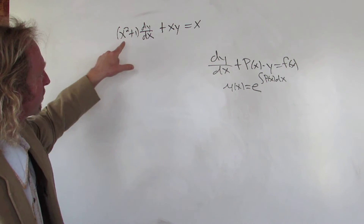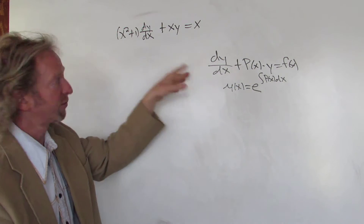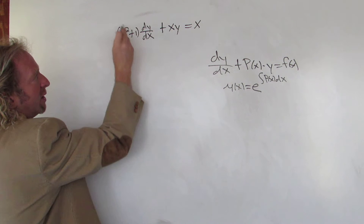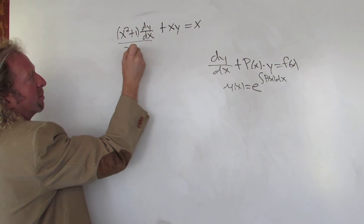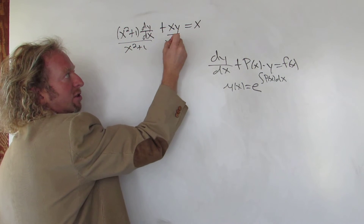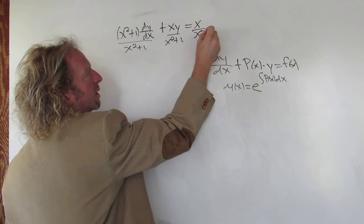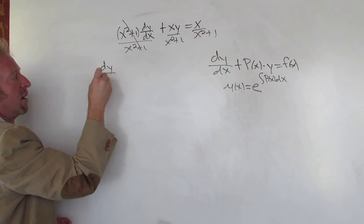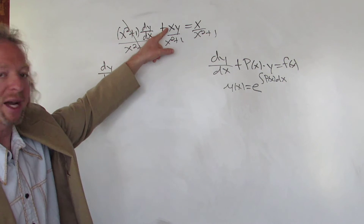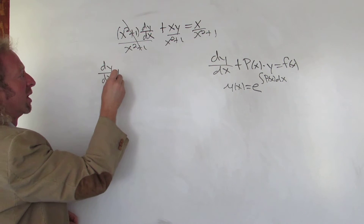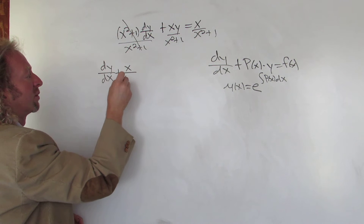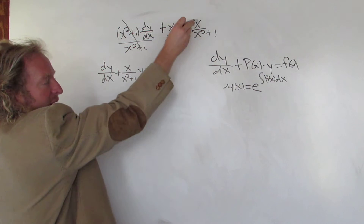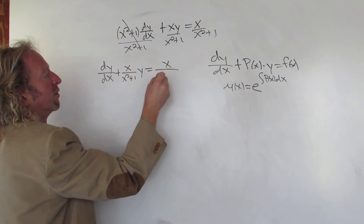In this case we first have to rewrite the equation in standard form. We'll divide everything by x²+1, so dividing by x²+1 it cancels. We get dy/dx plus x/(x²+1)·y equals x/(x²+1).